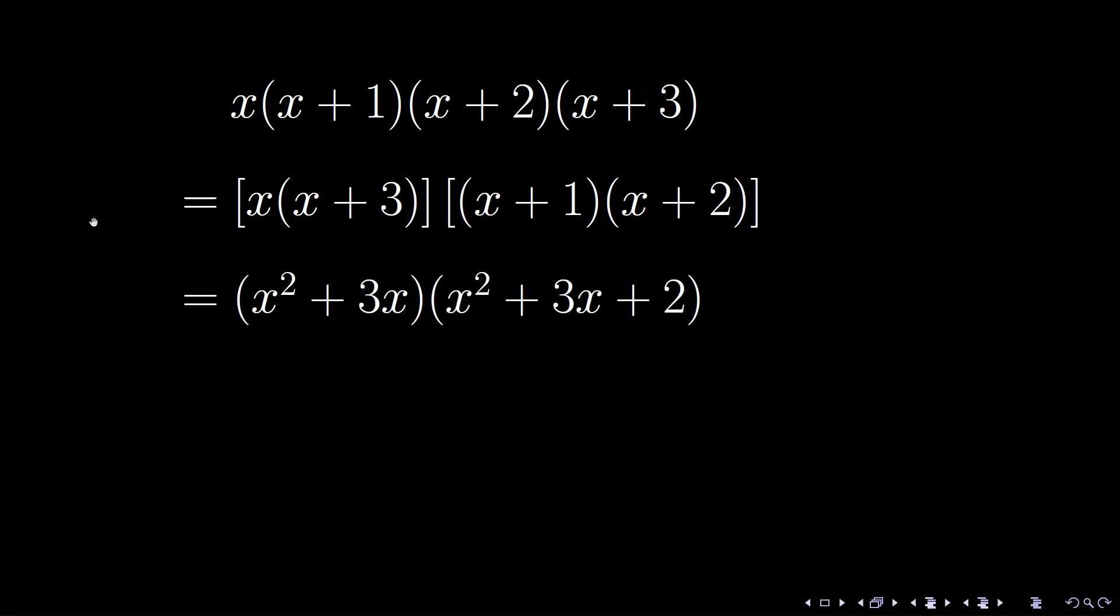The first group equals a quadratic polynomial x squared plus 3x. The second group equals x squared plus 3x plus 2. Both quadratic polynomials contain x squared plus 3x. That is the reason of the grouping.